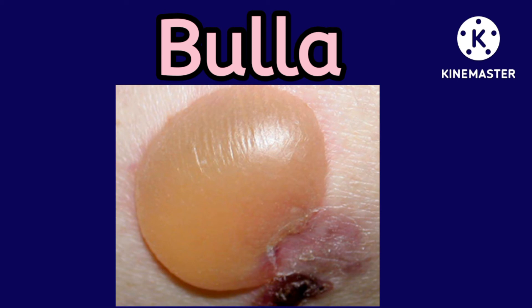Here you can see the diagram. Bullous Pemphigoid is a type of primary skin lesion. This is Bullous Pemphigoid. So thank you.